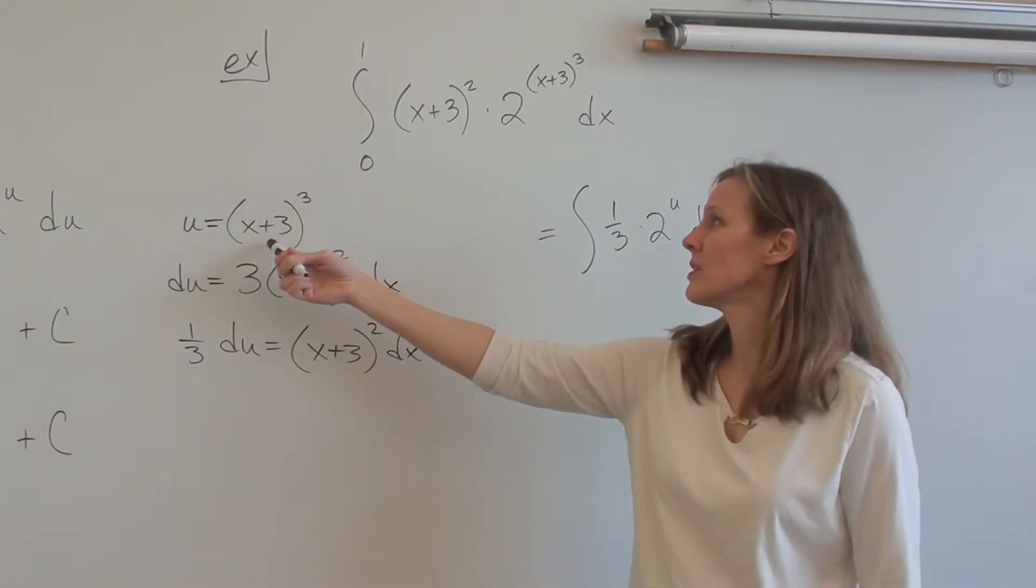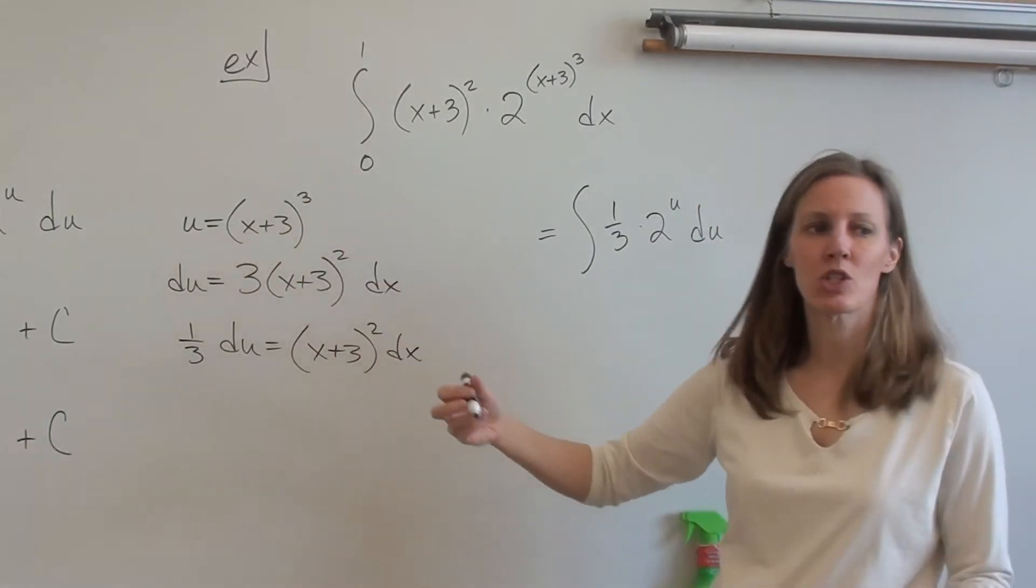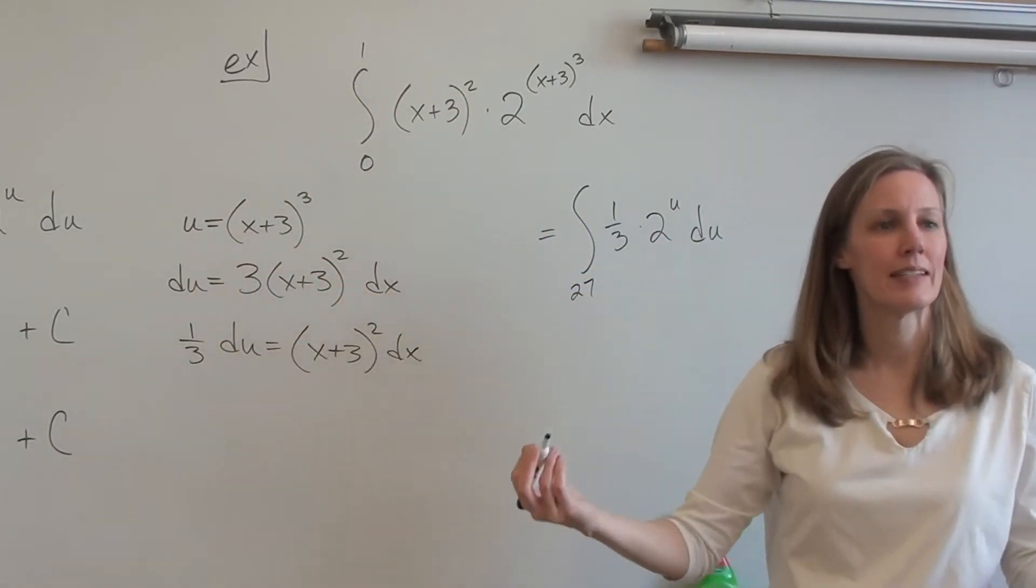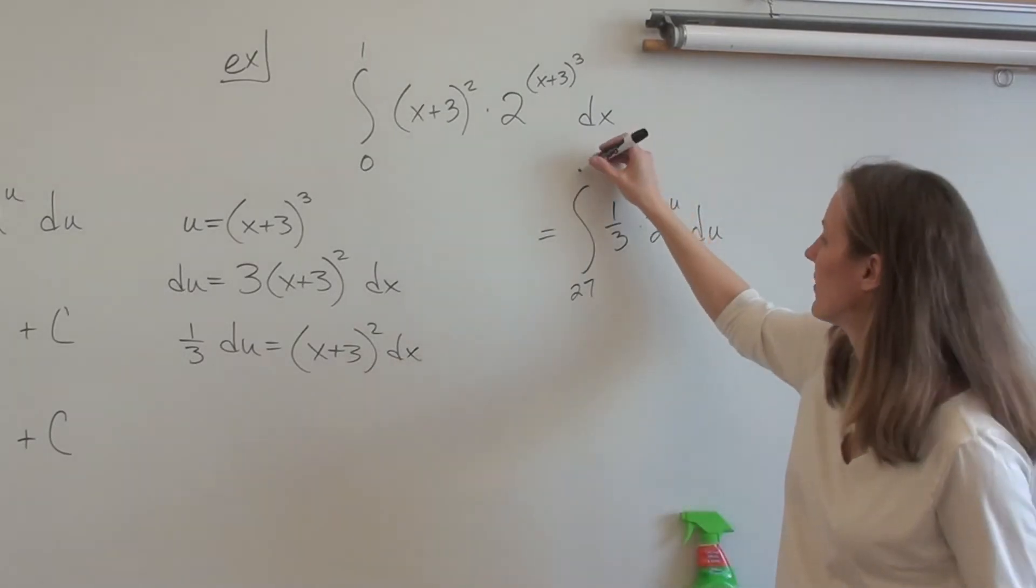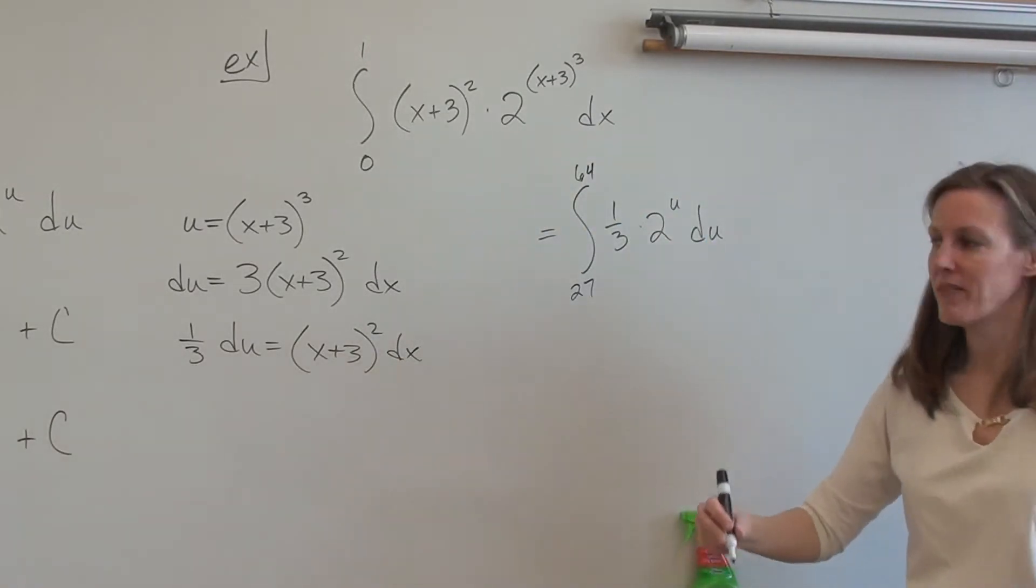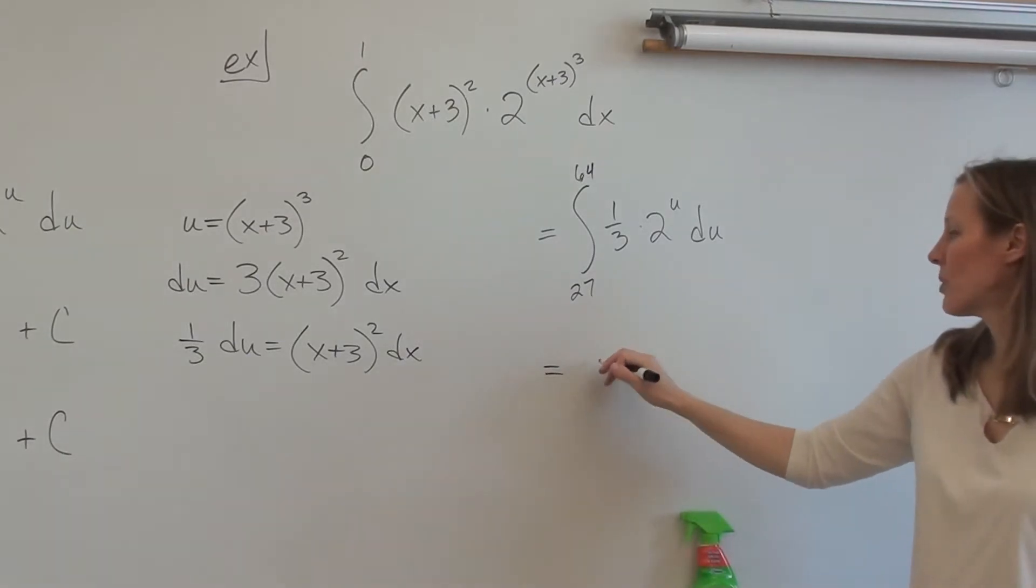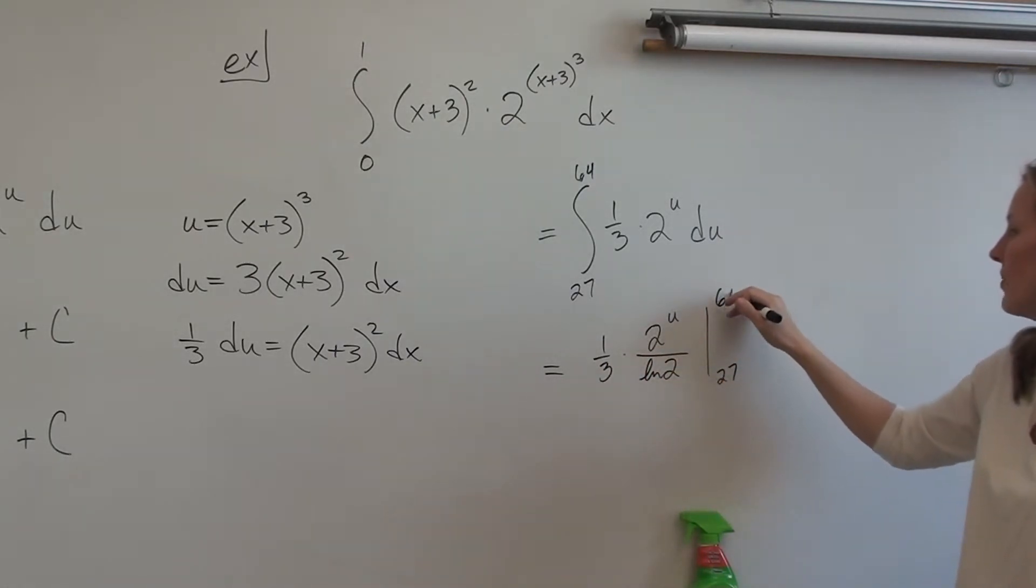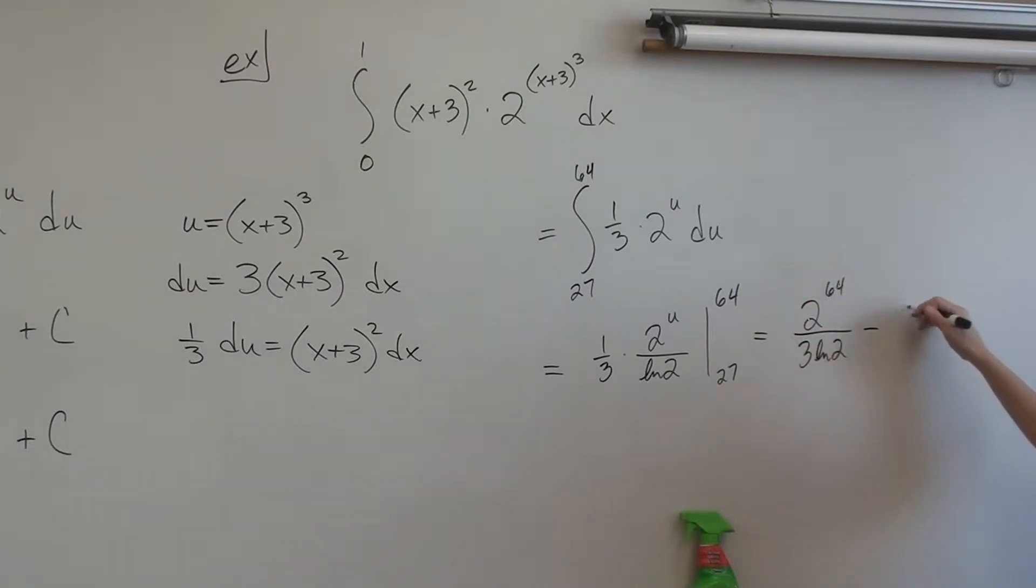So, ooh, we've got some big numbers here. So we have 3 cubed, which is 27, over 4 cubed, which is 64. Never mind. That was so good. I lied. So it's okay. It's all right. All right, so here's where we end up with. We have 1 third times 2 to the u over ln 2 from 27 to 64. Yeah, I'm not going to actually do this out. We have 2 to the 64th over 3 ln 2 minus 2 to the 27th over 3 ln 2.